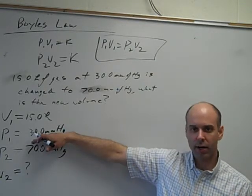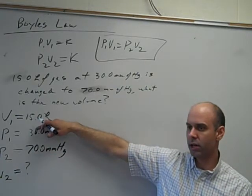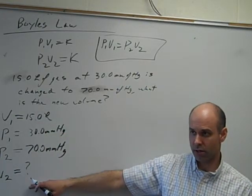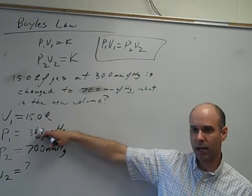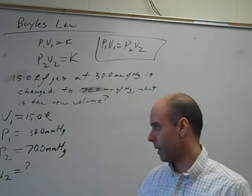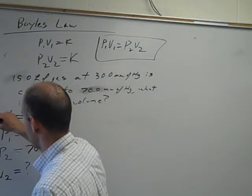Your pressure and volume can be in any units as long as they match. Temperature is the one place, Molly, where you don't have choice. Temperature must be in Kelvin. But millimeters of mercury, make sure the other one's in millimeters of mercury. If volume is in liters, then the other volume will be in liters.